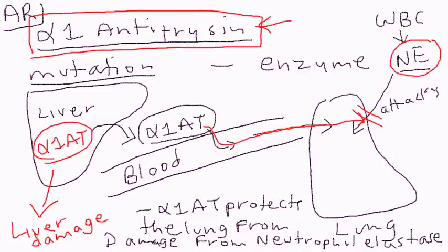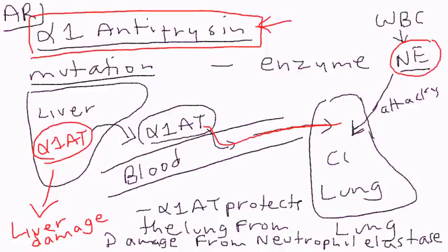The second thing that happens: because alpha-1 antitrypsin does not go into the bloodstream and does not reach the lung, neutrophil elastase is now free to attack the lung. When it attacks the lung, you develop lung disease — COPD, emphysema, chronic bronchitis.